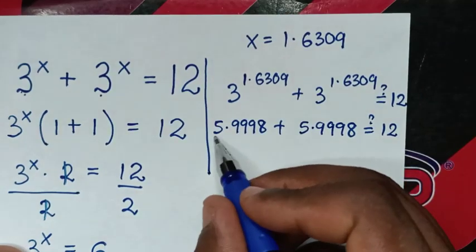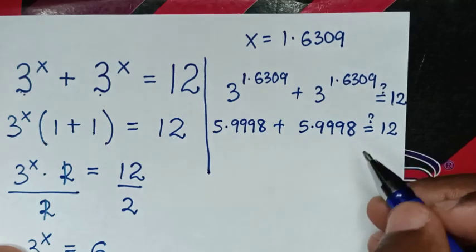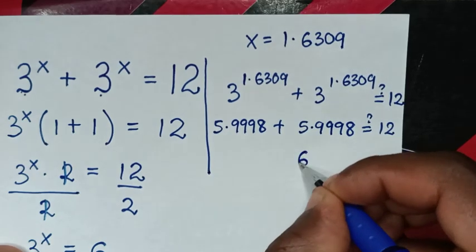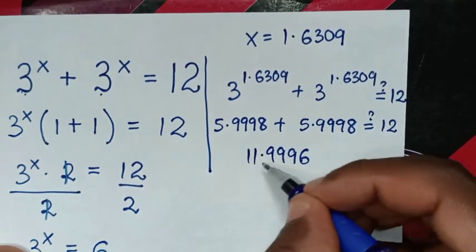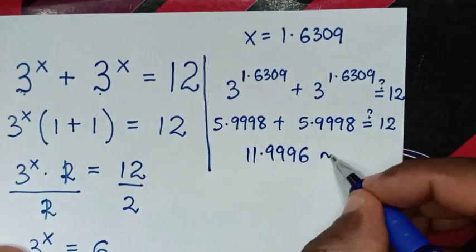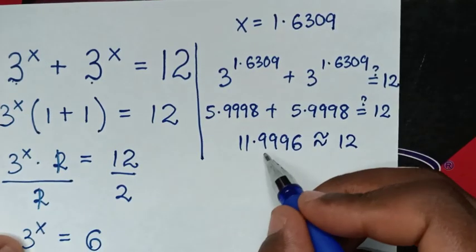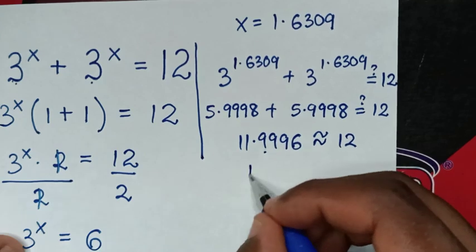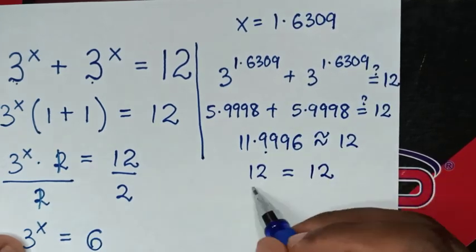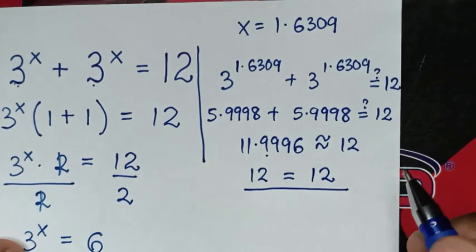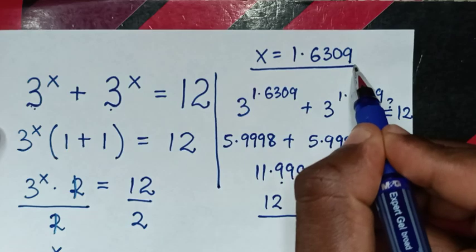The sum of 5.9998 plus 5.9998 is approximately equal to 12. So if we round off to 1 decimal place it will be 12.0, which equals 12. The left side and right side are equal, so it is true for the value of x, which is 1.6309.